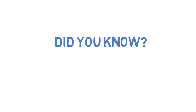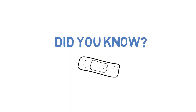Did you know that catheters have been around since 3000 BC and have been made out of many different materials over the years, including hollowed-out bamboo straws, rolled-up palm leaves, the hollow top of onions, as well as a variety of metals such as gold, silver, copper, brass, and lead? Now those are some uncomfortable catheters.